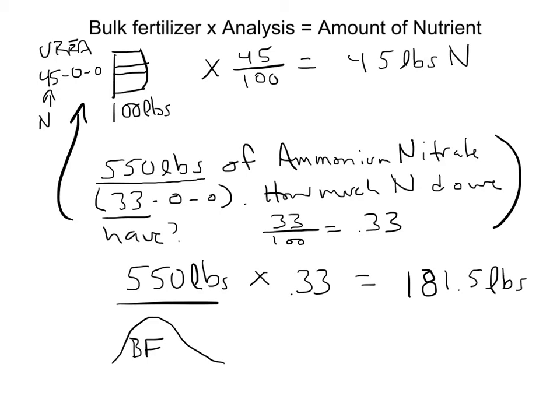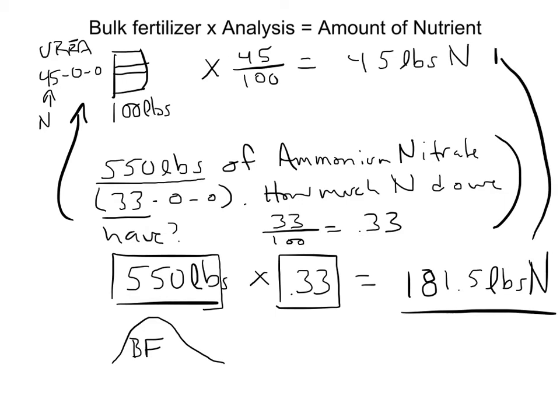And this time it's not pounds of bulk fertilizer, it's pounds of nitrogen, right? Because we're multiplying this bulk fertilizer amount times the amount of nitrogen contained in that bulk fertilizer. So this is our answer, and this corresponds to the amount of nutrient that we have in our sample. So this is the first way that we use this equation that we have here.